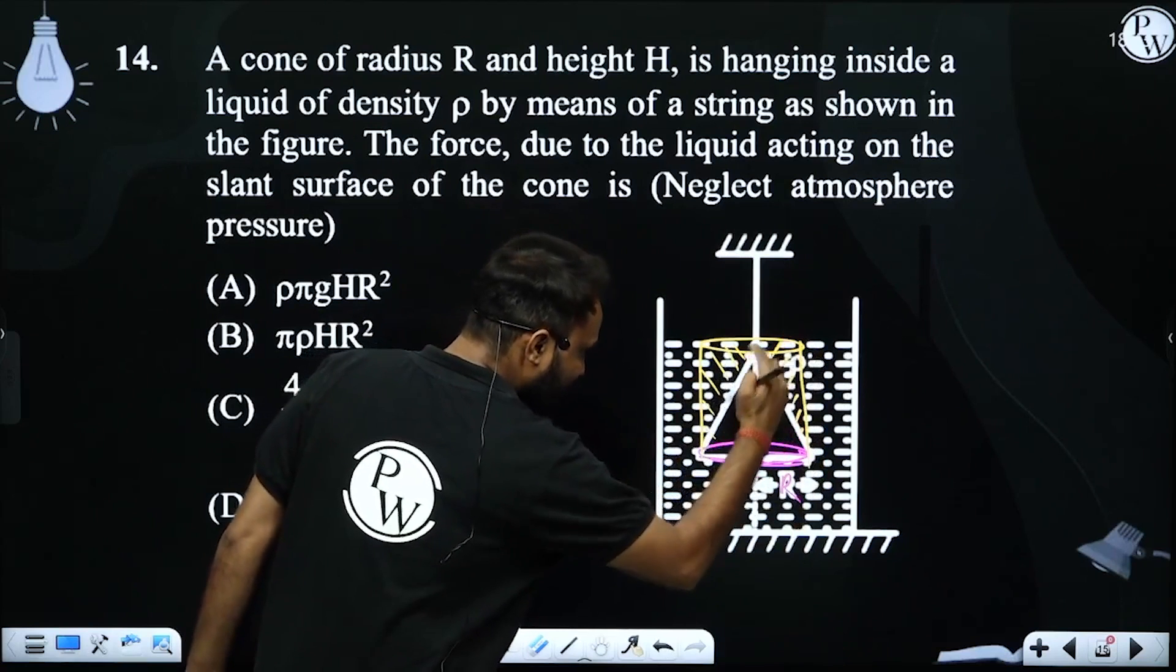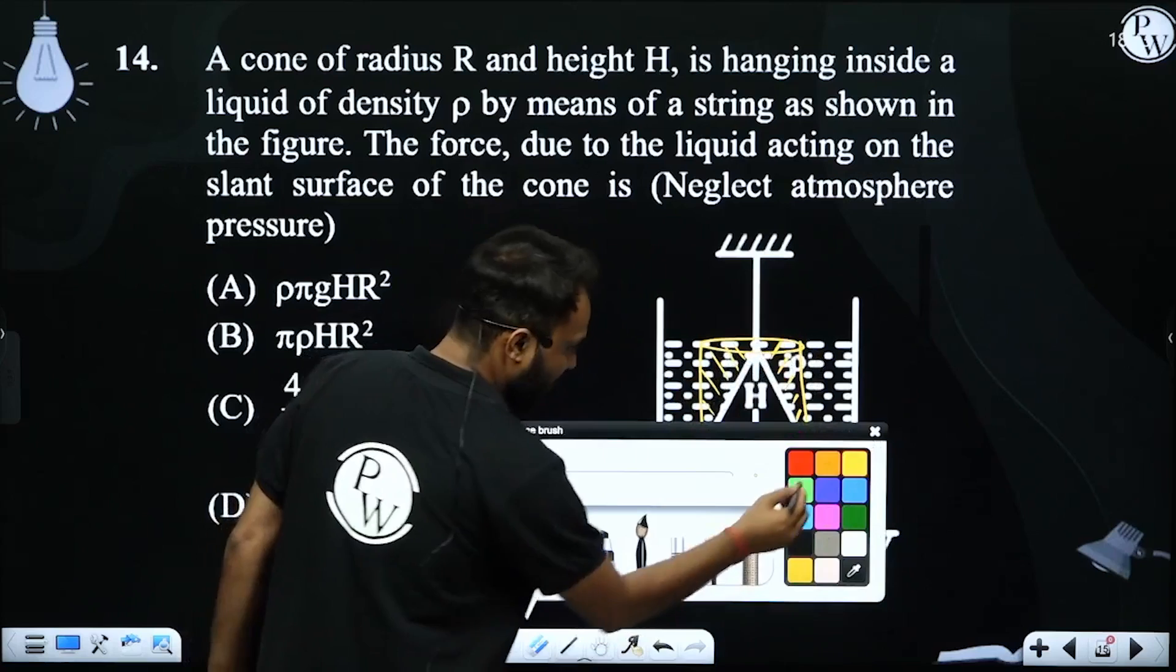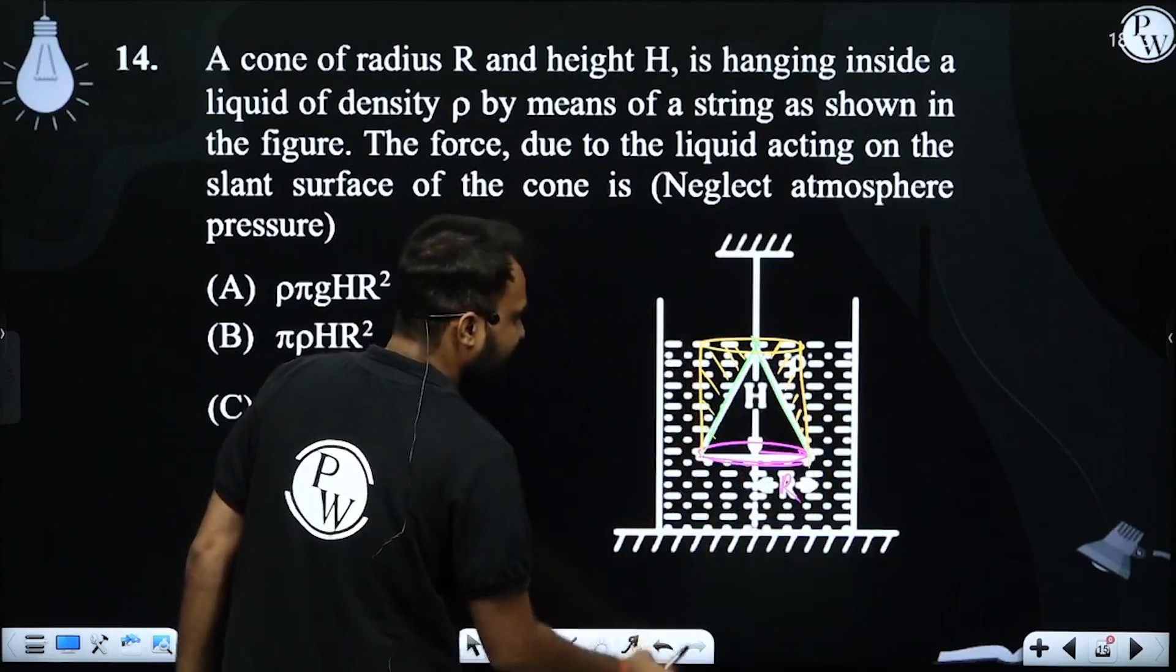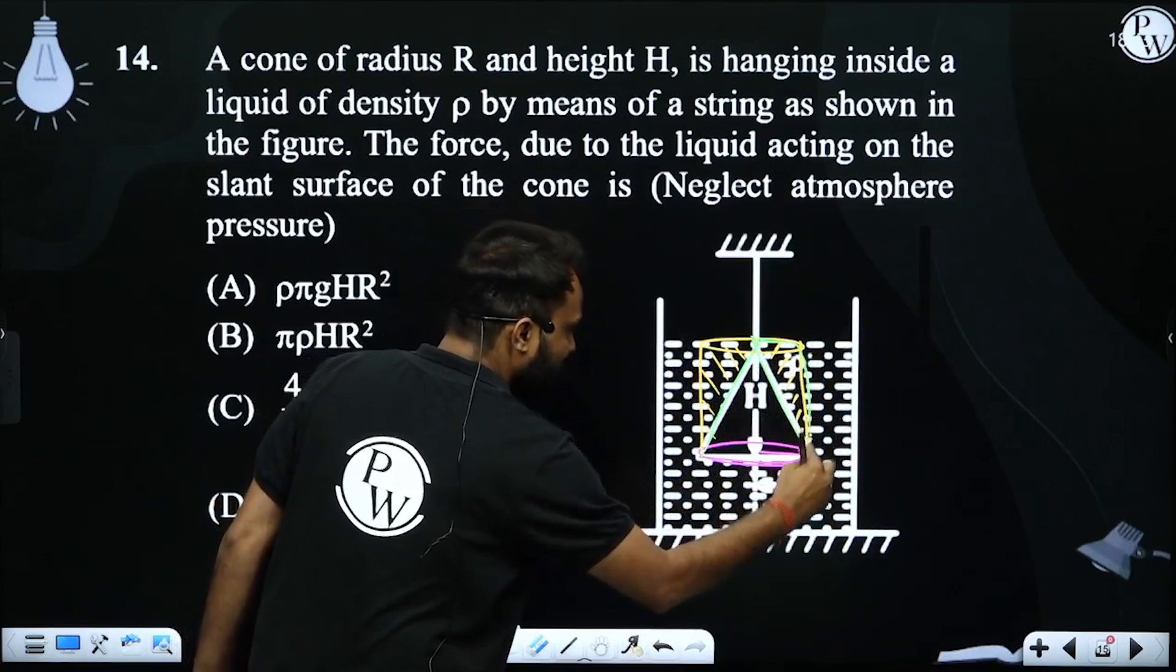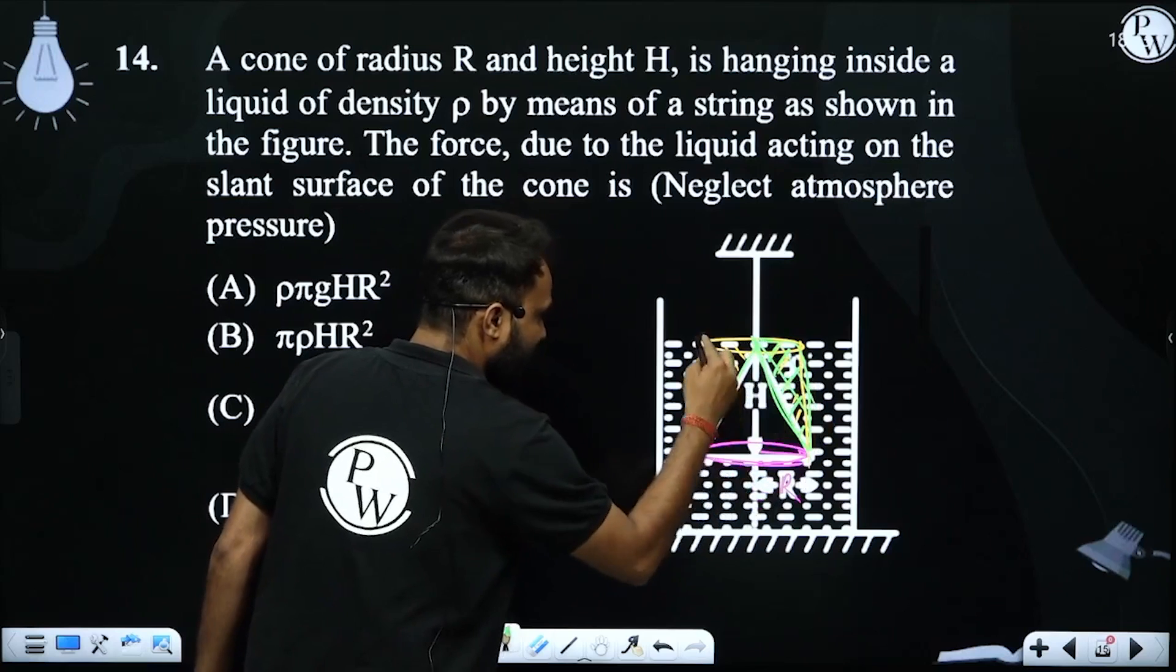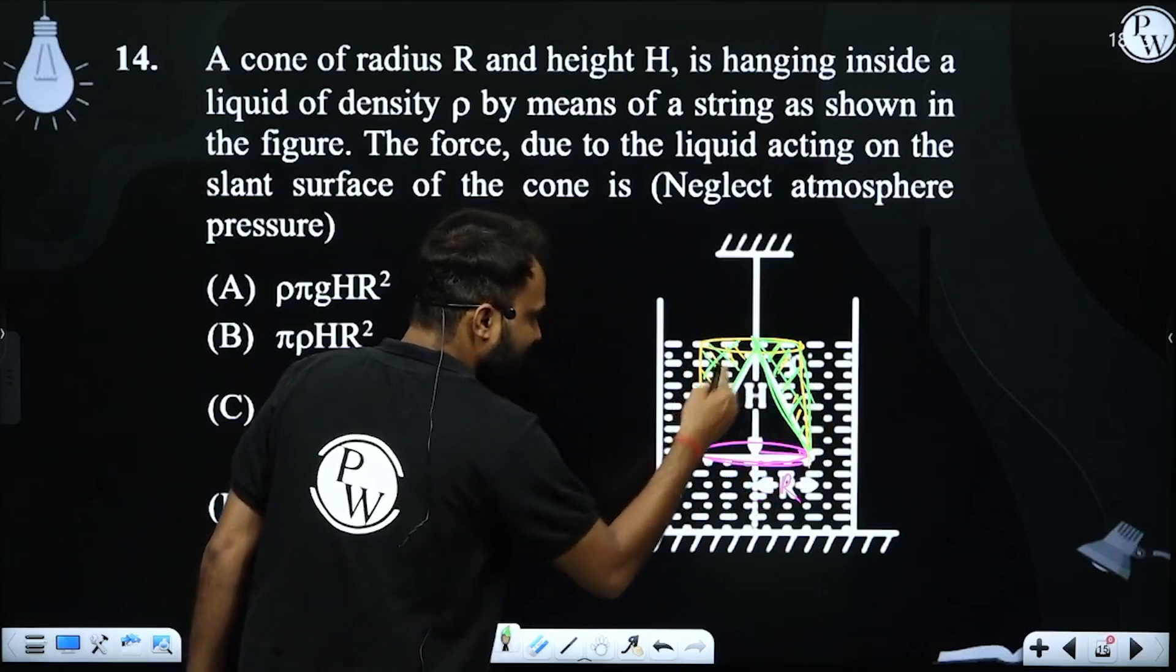Basically, a part of liquid on the slant surface will exert force. The rest of the liquid will exert pressure downward, but this shaded part of liquid here will exert force on the slant surface.